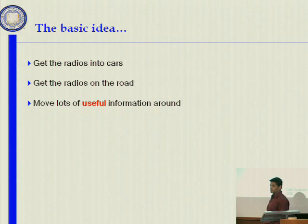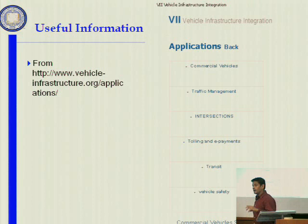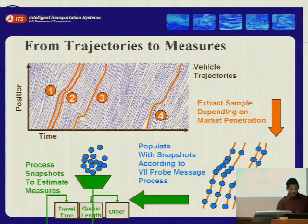The idea was to get radios into cars and on the road, and move lots of useful information around. USDOT created the Vehicle Infrastructure Integration Initiative as their way of capitalizing on the spectrum. Applications include commercial vehicles, traffic management, intersection safety, tolling, e-payments, and transit vehicle safety.